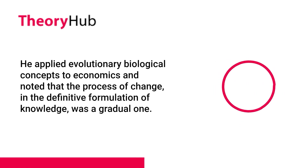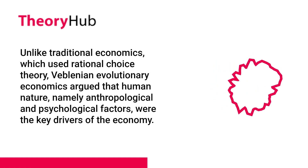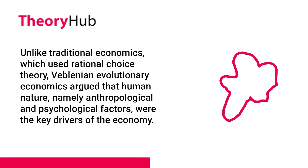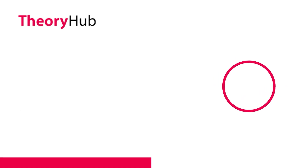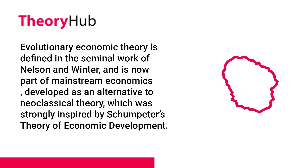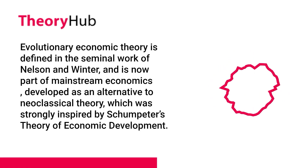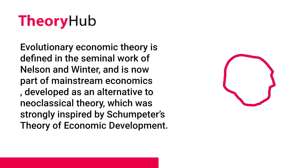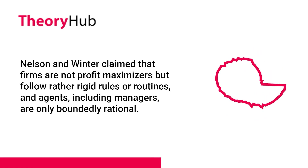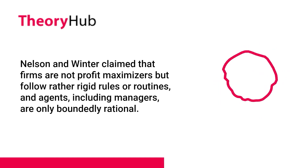Veblen applied evolutionary biological concepts to economics and noted that the process of change, in the definitive formulation of knowledge, was a gradual one. Unlike traditional economics, which used rational choice theory, Veblenian evolutionary economics argued that human nature — namely anthropological and psychological factors — were the key drivers of the economy. Evolutionary economic theory is defined in the seminal work of Nelson and Winter, and is now part of mainstream economics, developed as an alternative to neoclassical theory, strongly inspired by Schumpeter's theory of economic development. Nelson and Winter claimed that firms are not profit maximizers but follow rather rigid rules or routines, and agents, including managers, are only boundedly rational.